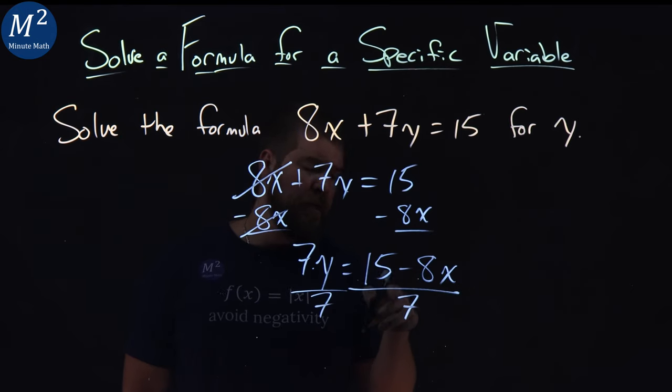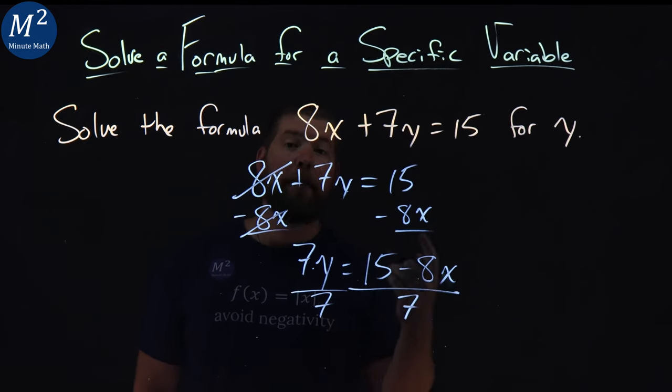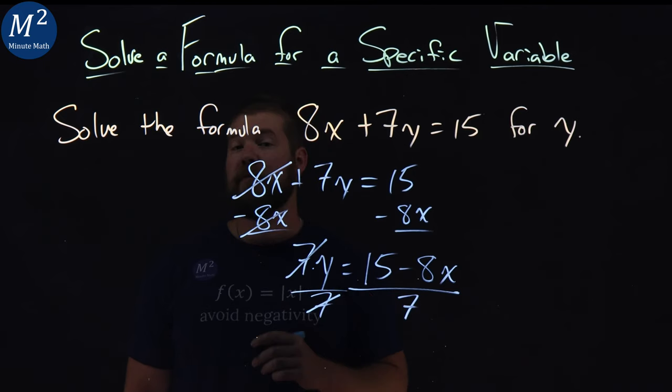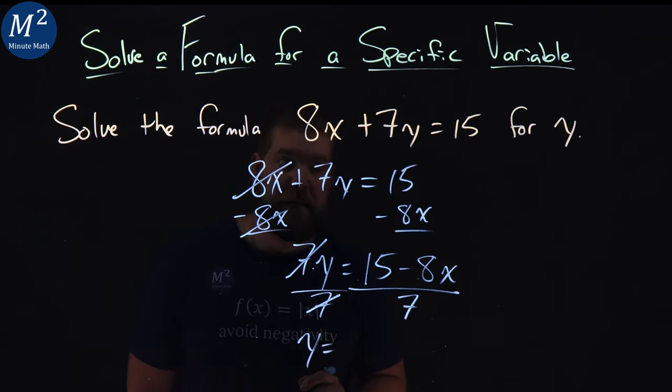Now, make sure with the right-hand side here, you divide both parts divided by 7, 15 minus 8x over that 7. 7 goes to both parts. 7s on the left cancel, and we have our good old y by itself.